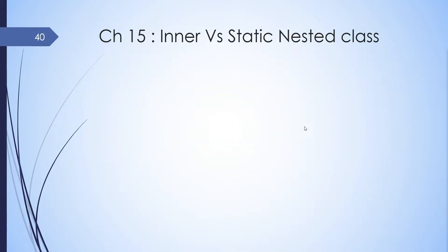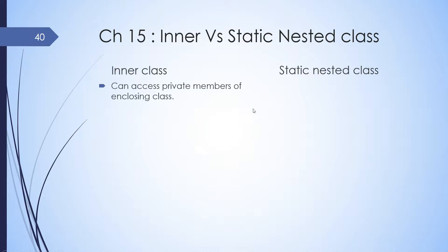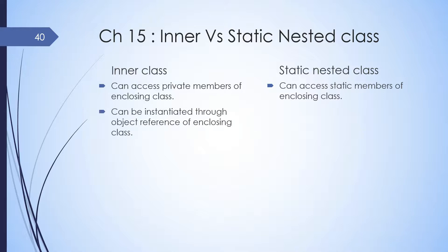Let's take a look at the difference between inner and static nested. An inner class can access private members of an enclosing class. A static nested class can access only static members of an enclosing class — it cannot access non-static members. An inner class can be instantiated only through an object reference of an enclosing class, while a static nested class can be instantiated using the enclosing class name. We will be looking at an example of this.